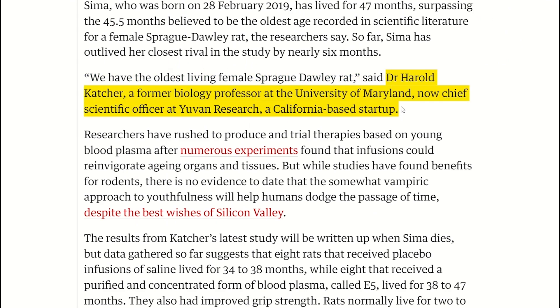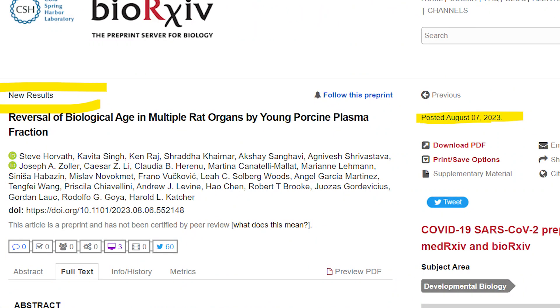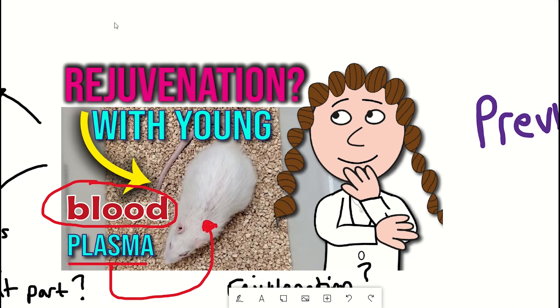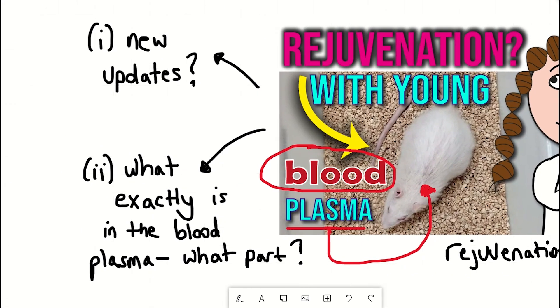Now there's a new preprint with some updates to the study. So firstly we'll take a look at some of these updates in terms of measurements and then we'll discuss the interesting question which I left untouched last time, which is, what is E5?